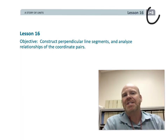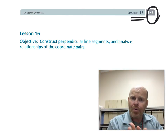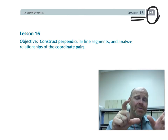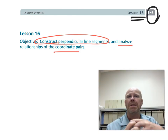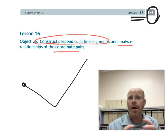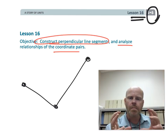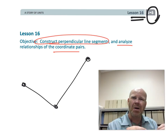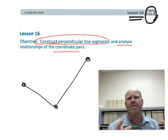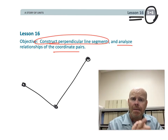This is 5th grade Module 6 Lesson 16. Students are going to continue studying the patterns found when we analyze the coordinate pairs of two lines that are perpendicular. Keep in mind this seems to be a little beyond the scope of the classic Common Core 5th grade standard. If time is running short, the core scope is really to locate points on the grid and understand perpendicular and parallel lines. The coordinate-pair analysis part seems a little beyond the standard, so take that into consideration. Let's get started.